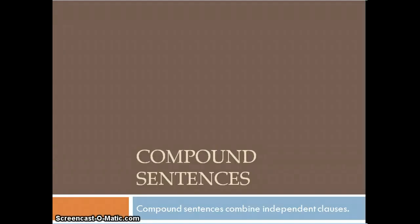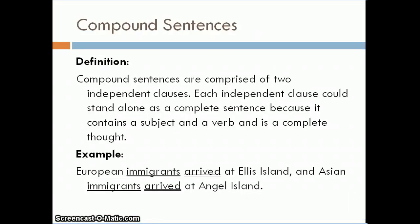In this video we're going to talk about compound sentences. Compound sentences combine independent clauses — they are comprised of at least two independent clauses. An independent clause must contain a subject, a verb, and a complete thought, so essentially an independent clause could stand alone as a complete sentence.